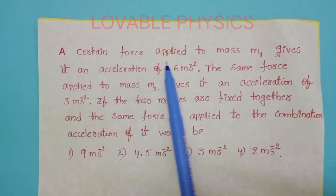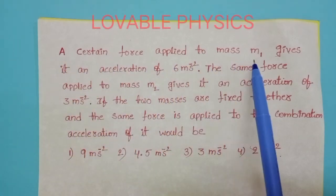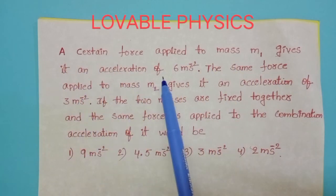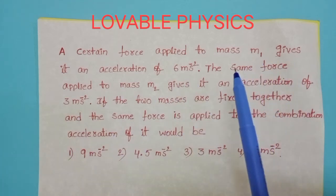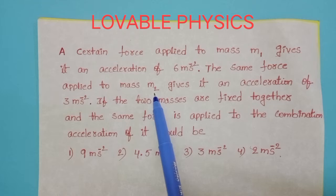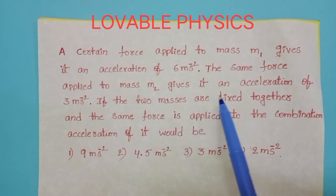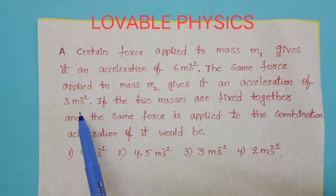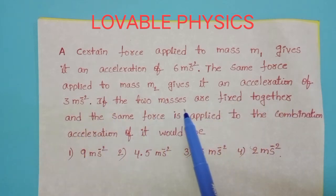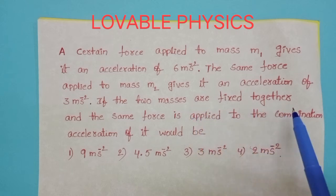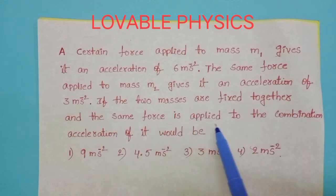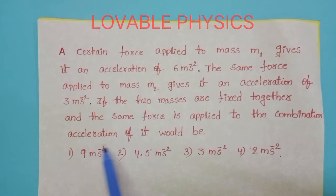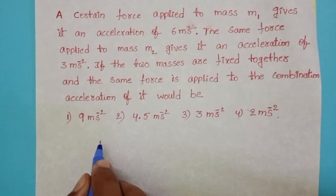A certain force applied to mass M1 gives it an acceleration of 6 meters per second square. The same force applied to mass M2 gives it an acceleration of 3 meters per second square. If the two masses are fixed together and the same force is applied to the combination, what would be the acceleration?